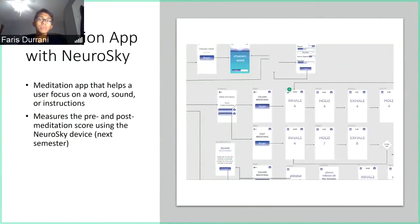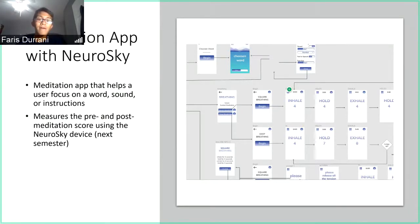The second project is the Meditation app, in collaboration with the Neurosky sub-team. This app will help a user to focus on a word, sound, or a set of instructions based on their preferences to help with their meditation needs. In the long term, we are planning to leverage the Neurosky API to allow the device to measure the pre- and post-meditation score of the user.